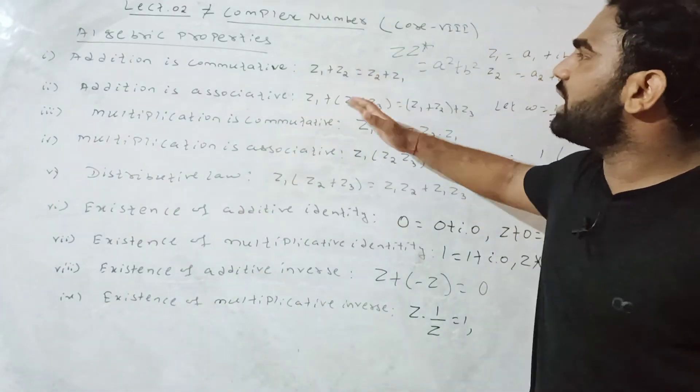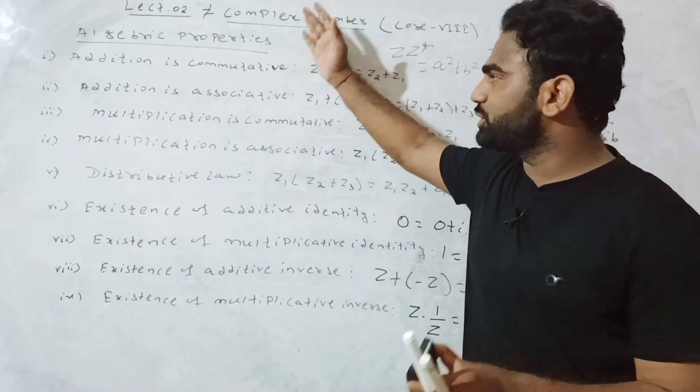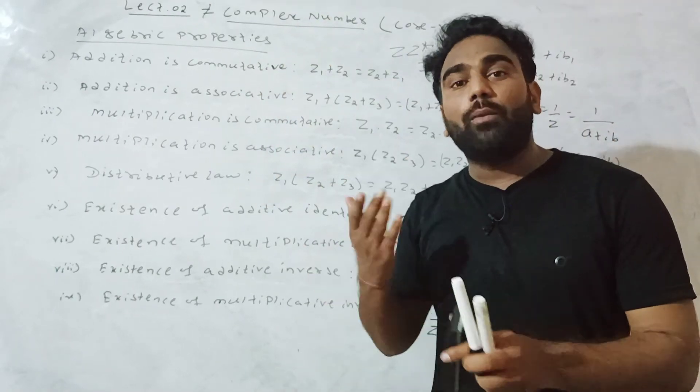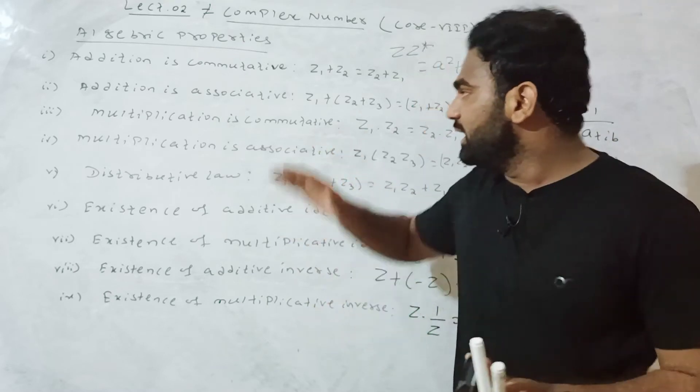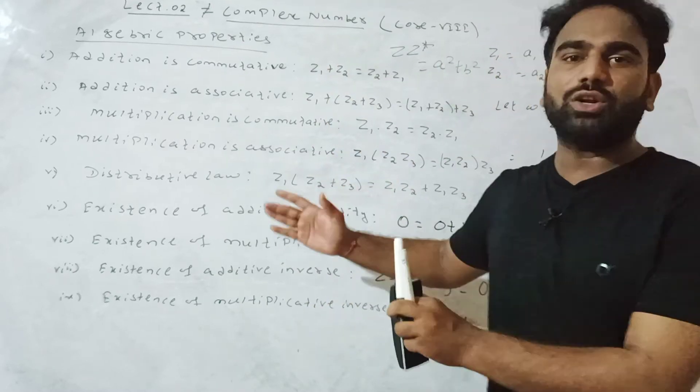Now we move to complex conjugate properties, the z bar properties.